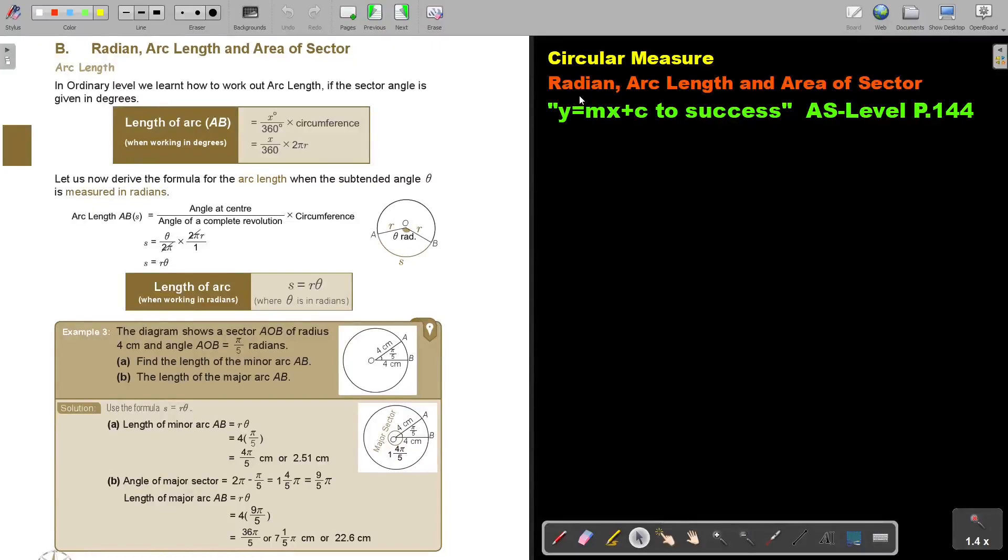In this video we will look at radian, arc length, and later on area of a sector in other videos. You will find this on page 144 in the Namibia AS level mathematics textbook Y equals MX plus C to success.